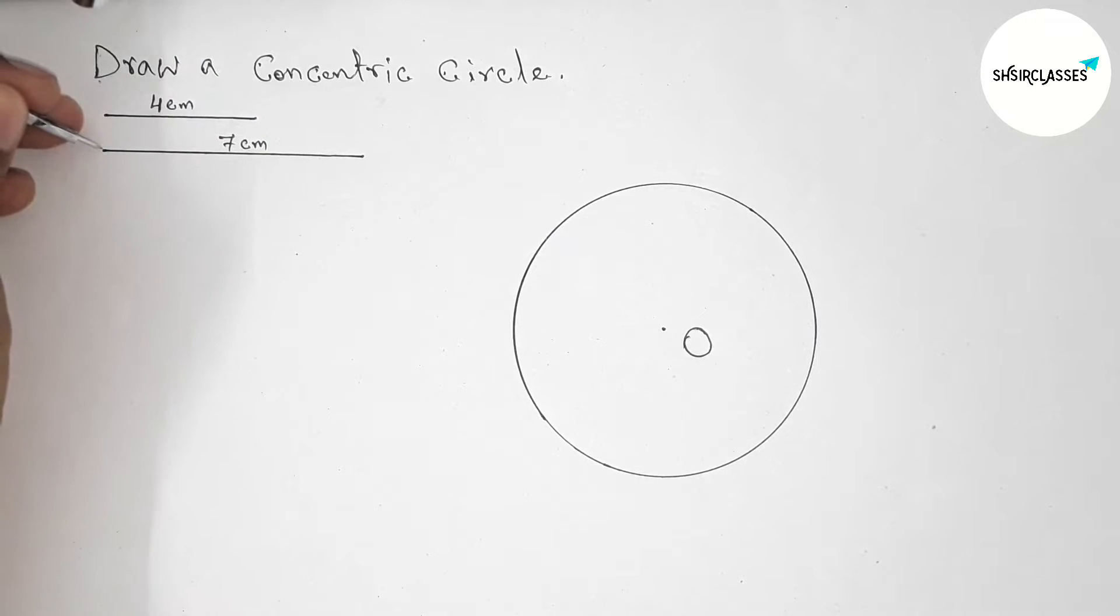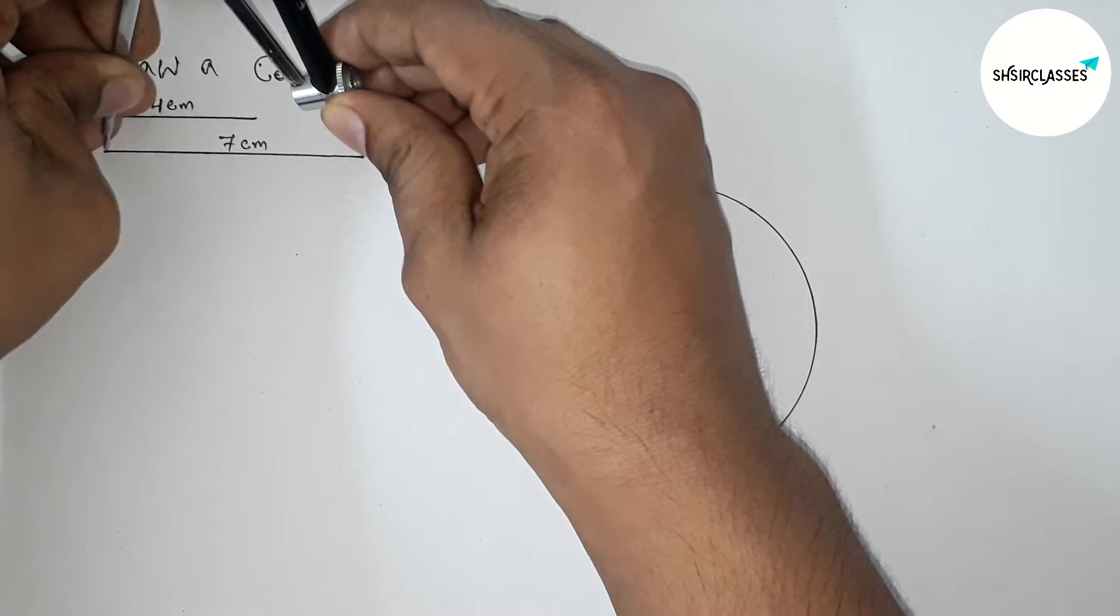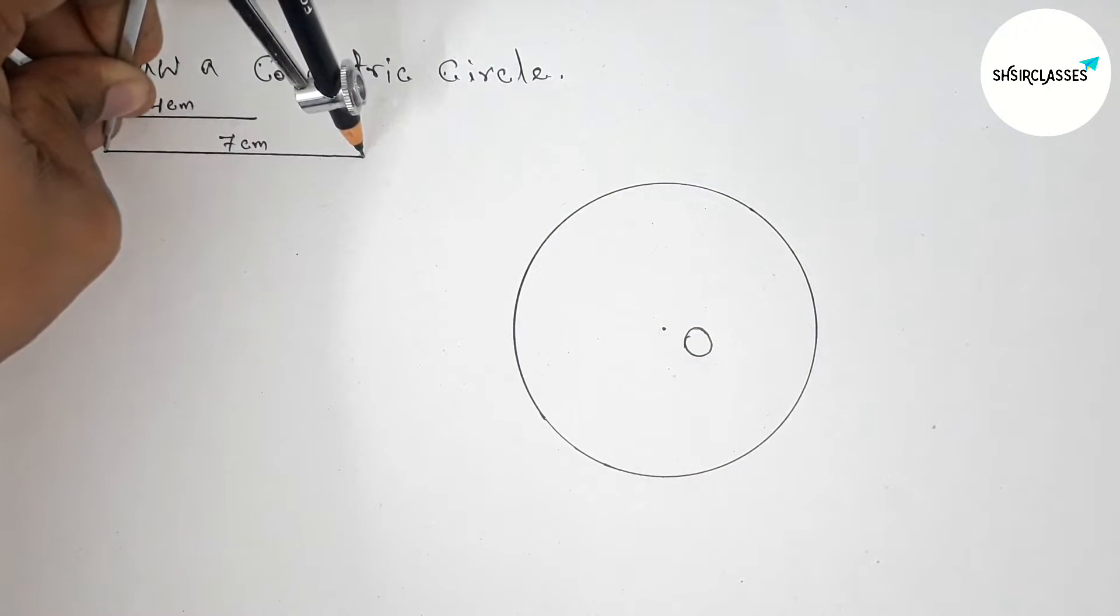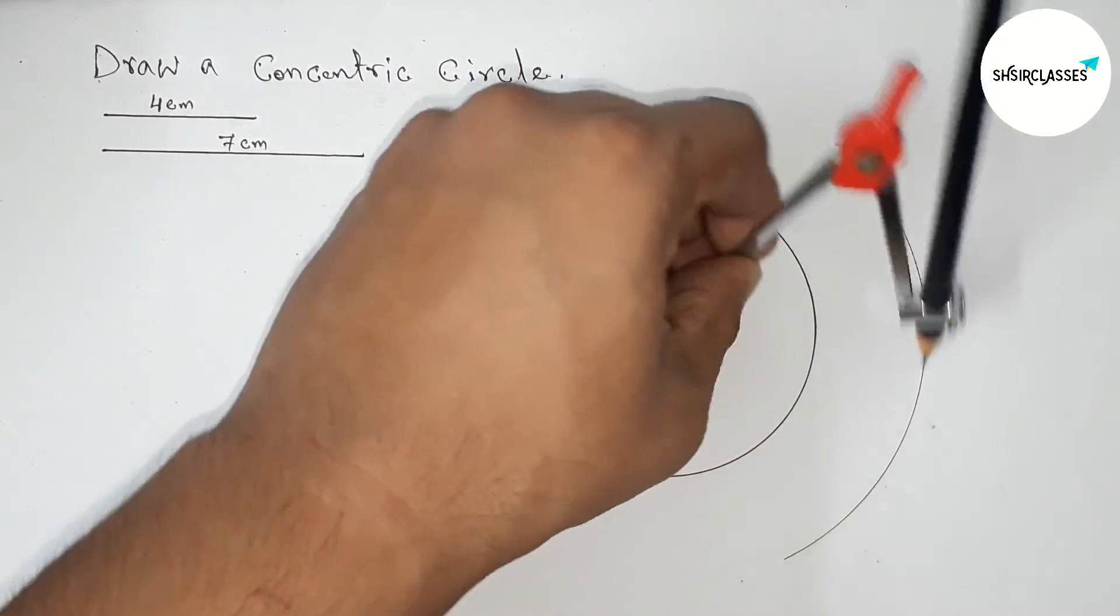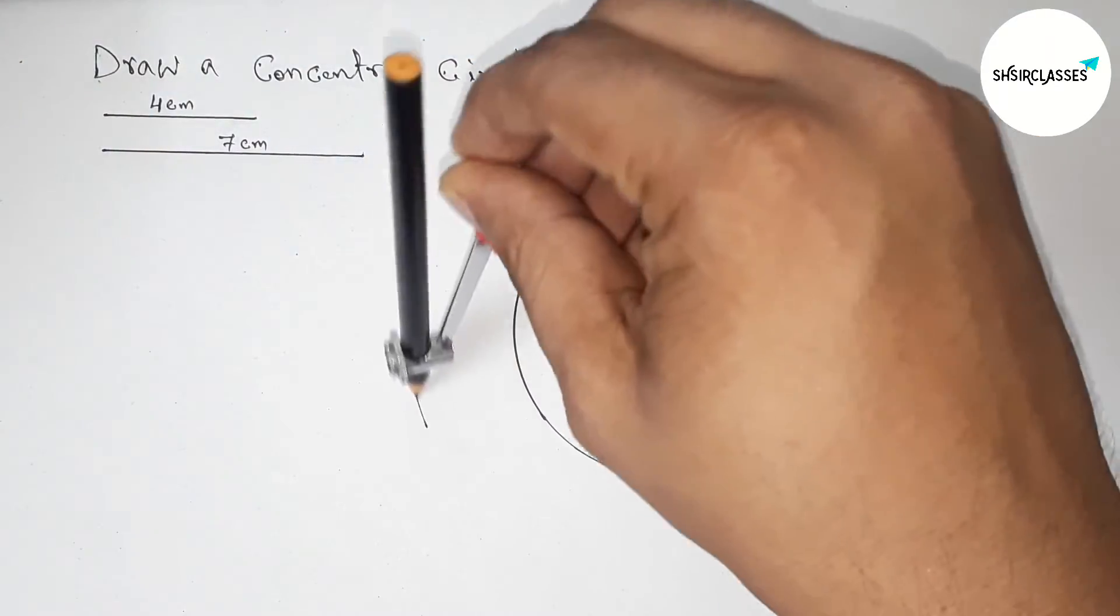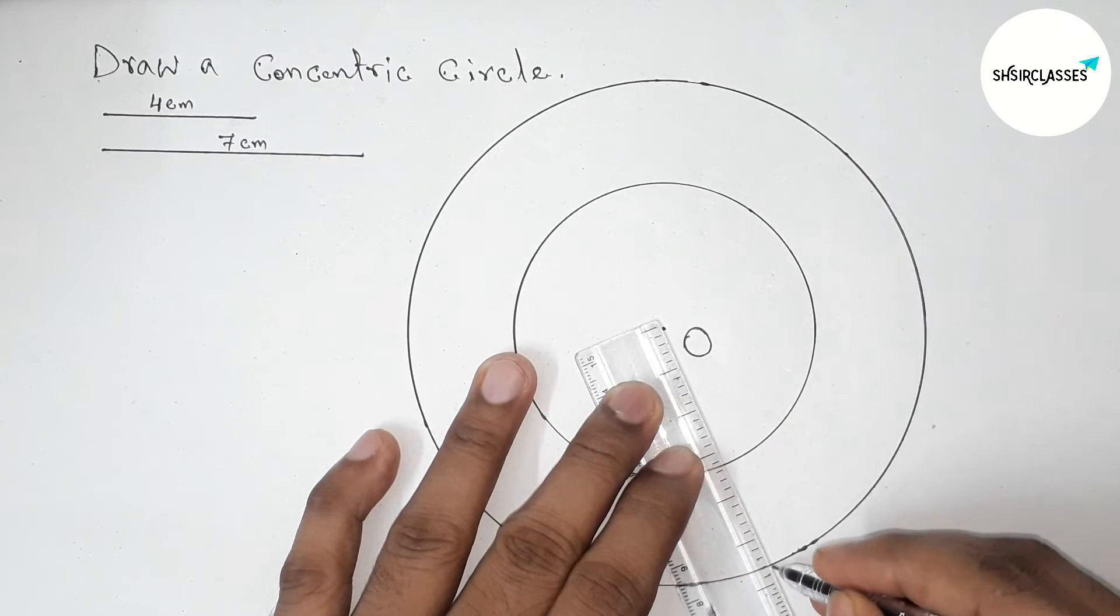Now taking the radius seven centimeter. This is perfect. Now putting the compass on the point O and again drawing here an arc. So this is a perfect circle.